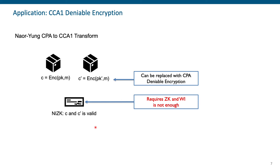What we can do is replace the encryption scheme with the CPA Deniable Encryption Scheme from Sahai and Waters. The problem is that the proof system used in this transformation requires zero knowledge, but in our paper we can only achieve witness indistinguishability — and witness indistinguishability alone is not enough. So we show that using the random oracle model, we can replace the non-interactive zero knowledge proof with a non-interactive witness indistinguishable proof and a change to the statement. Now the statement says that ciphertexts C and C-prime are valid, extended by an OR proof stating that the hash of both ciphertexts is a DDH tuple. This is what we call a trapdoor witness, which allows us to make the changes in the security proof without relying on zero knowledge, basing the argument on witness indistinguishability instead.